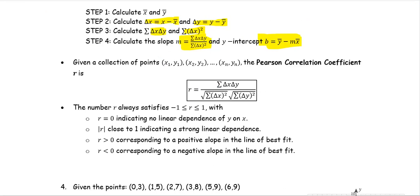A concept closely related to linear regression is that of correlation. Given a collection of points x1y1, x2y2, up until xnyn, the question of whether the collection shows a linear dependence of y on x can be asked. The Pearson correlation coefficient r allows us to answer this question objectively, and its computation is similar to linear regression.